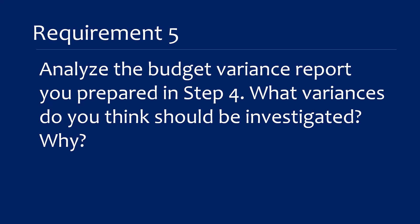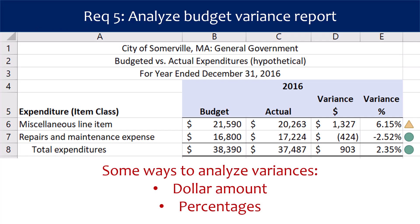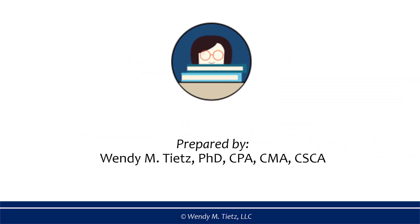Requirement 5 reads: analyze the budget variance report you prepared in Step 4. What variances do you think should be investigated? Why? When answering these questions, think about two ways to analyze variances — by dollar amount and by percentage. That concludes this data analytics tutorial covering budgeting and performance evaluation using Excel pivot tables and charts. This video was created by Dr. Wendy Teets. Thanks for watching.